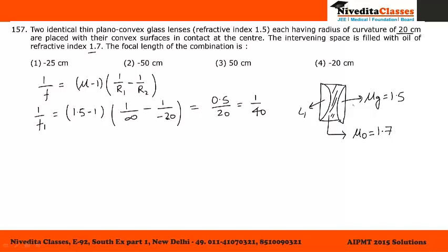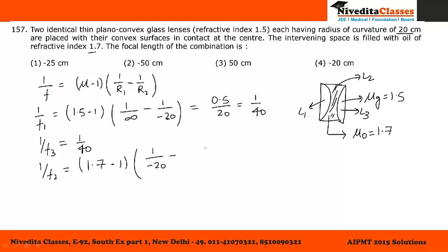Lens L3 is similar to L1, so 1/F3 also equals 1/40. Lens L2 is made up of oil, so we use refractive index 1.7: (1.7 - 1) into (1/(-20) - 1/20), giving 0.7 into (-2/20), which equals -2.8 divided by 40.